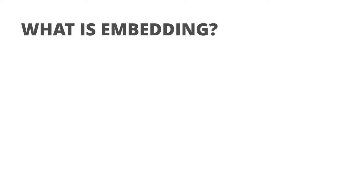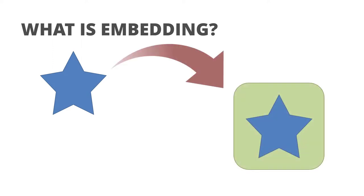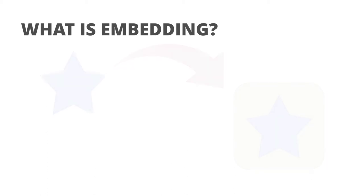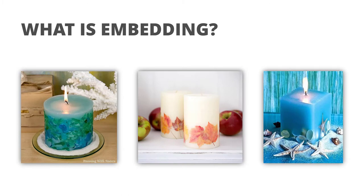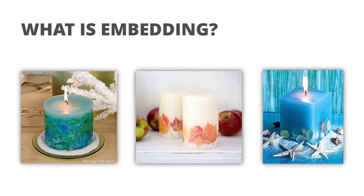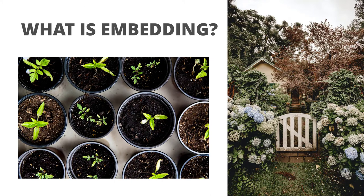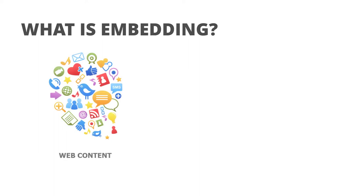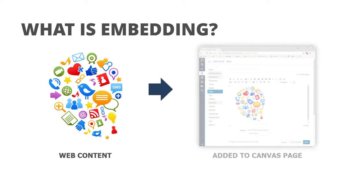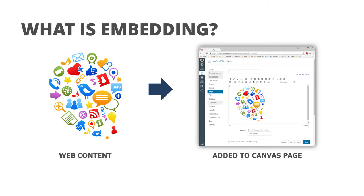So what is embedding? Embedding is essentially when you take an element and put it into another element — you give it a different home. You see examples of embedding all over in real life: candle makers embed leaves or shells into their candles; if you plant something from a nursery into your garden, you're embedding it. In Canvas, embedding means taking content that's somewhere on the internet — a blog post, an edtech interaction — and placing it into your Canvas course.